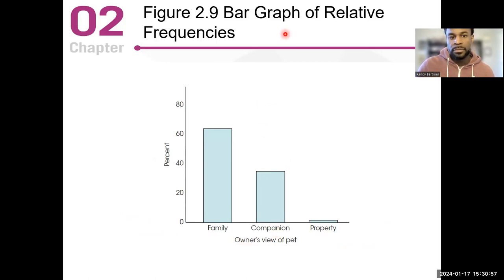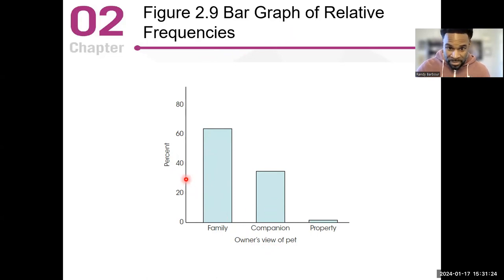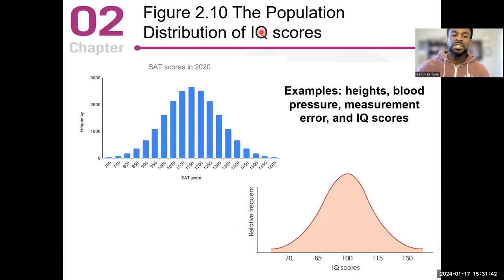Here is a bar graph showing relative frequencies — when you don't want to use raw numbers you can use percentages. This shows people's point of view for their particular pet: 60% say they view their pet as a family member, about 30% view their pet as a companion, and very few view their pet as property. Here is the population distribution for SAT scores — you see that you have a lot of individuals who score average SAT scores in the middle, and then fewer and fewer people as you get to the higher scores or very low scores.